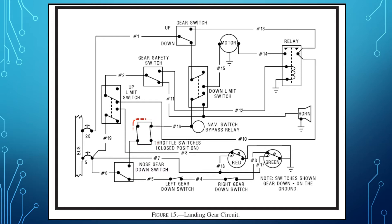The down limit switch also allows current to flow from the gear switch to the motor so the gear can be lowered. Once the gear is fully down, the down limit switch opens that part of the circuit, shutting off power to the gear motor.